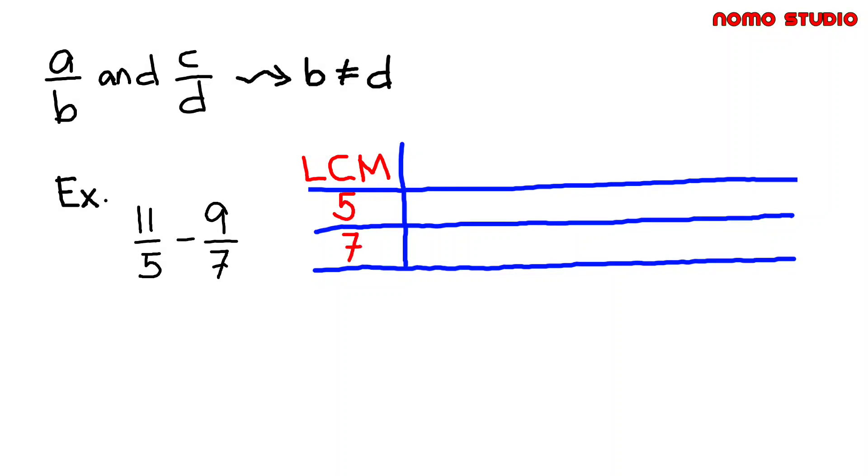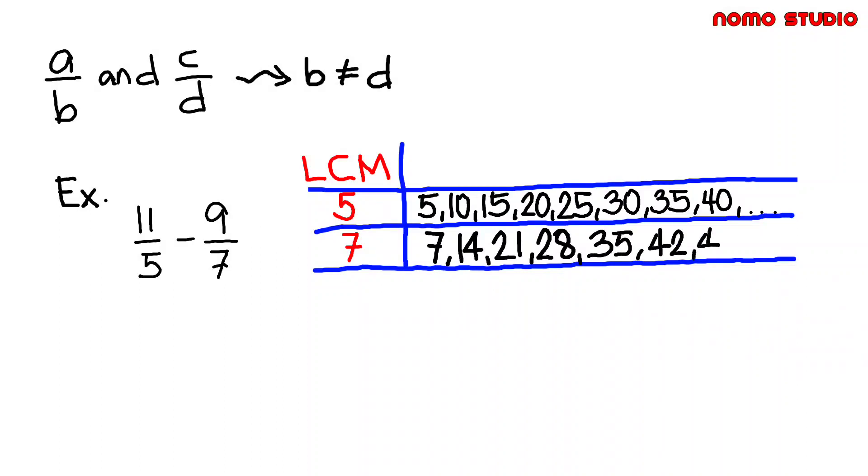Multiples of 5 are 5, 10, 15, 20, 25, 30, 35, 40, and so on. And for number 7, we have 7, 14, 21, 28, 35, 42, 49, and so on.